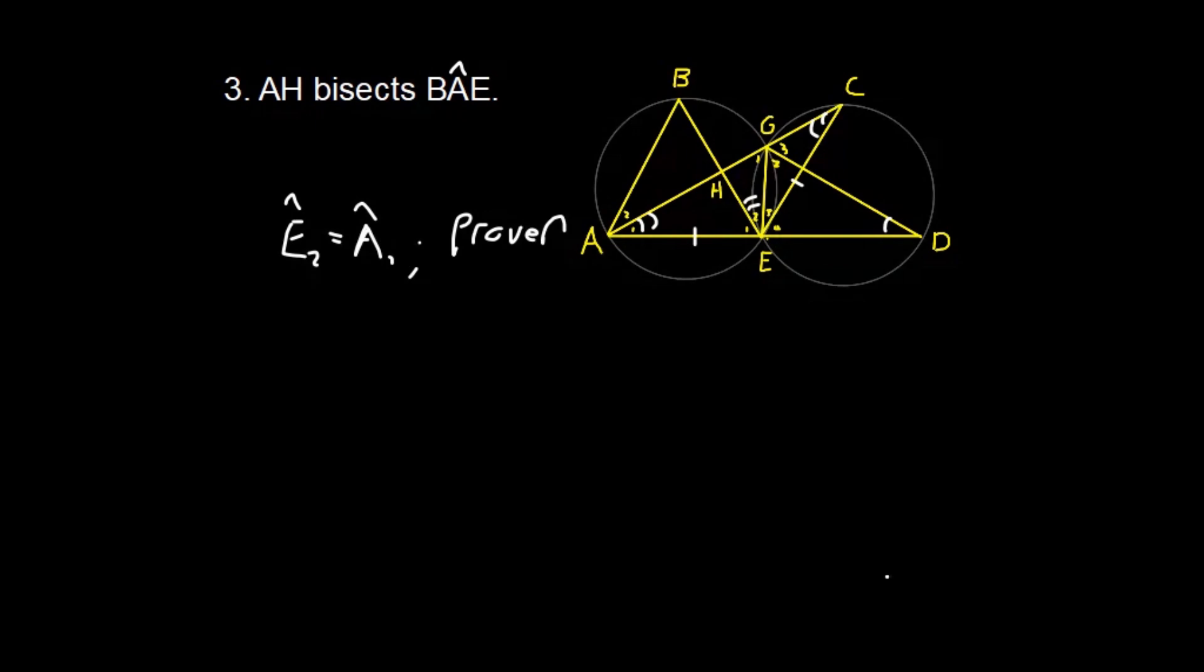Okay. Fantastic. Now we can go and say, well, angle E2 is equal to angle A2. And that would be angles in same segment. Okay. Great. And then we can say, well, these E2's are the same. So, angle A1 is equal to angle A2. And that tells us essentially that, therefore, AH bisects angle BAE.